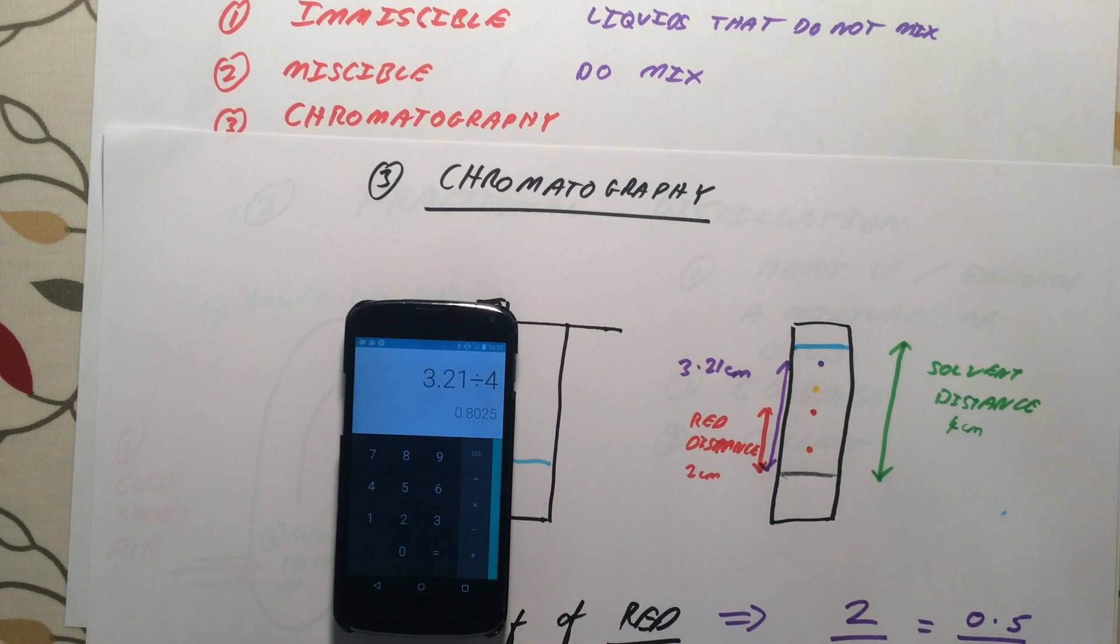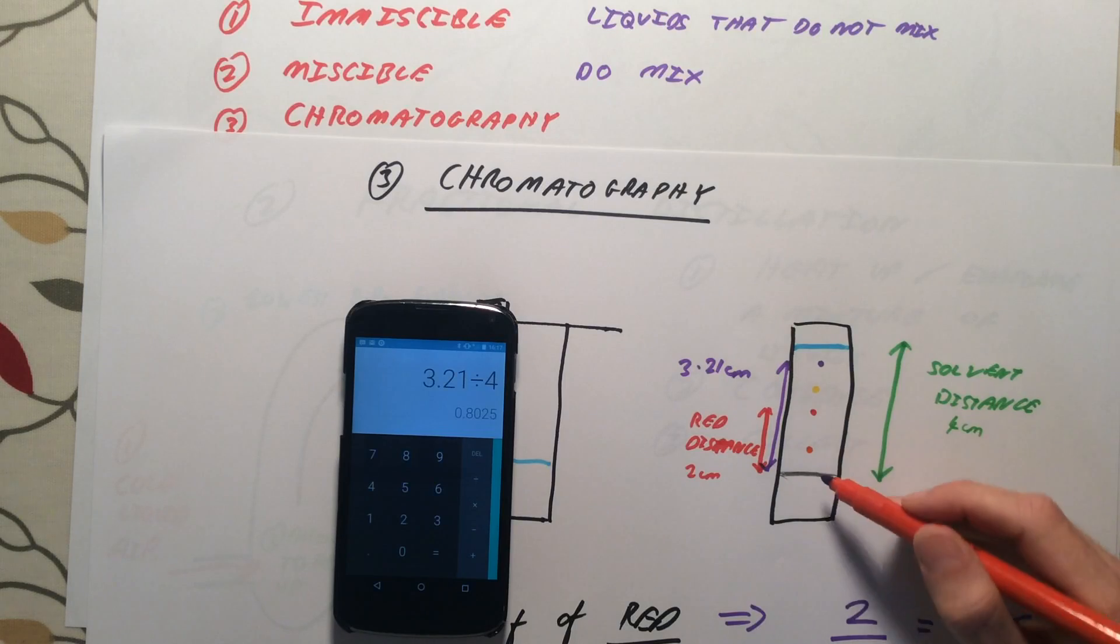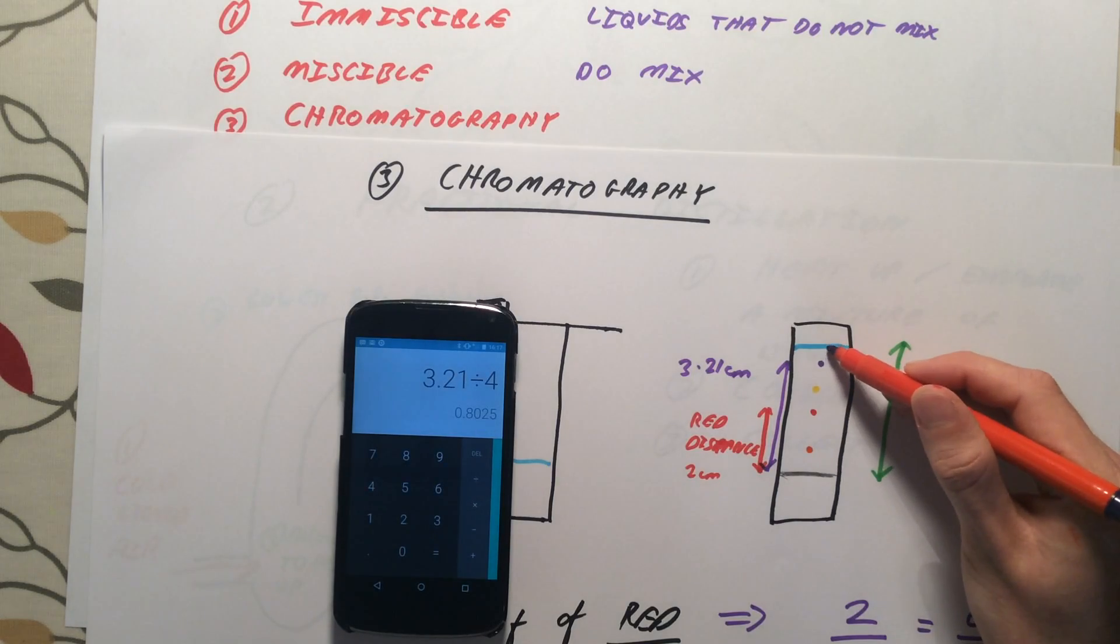So it's really important when you do these that your final answer is between 0 and 1. Remember that if the retention factor is 1, the ink would have travelled at exactly the same speed as the solvent.